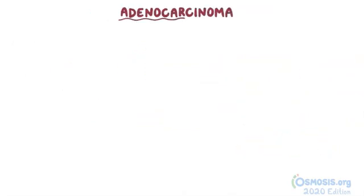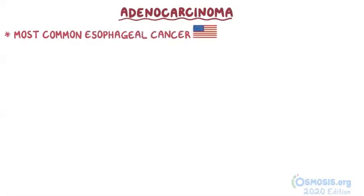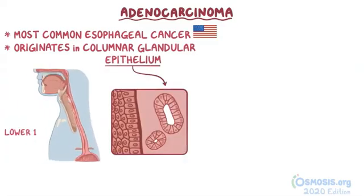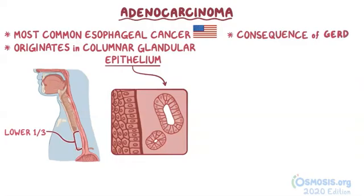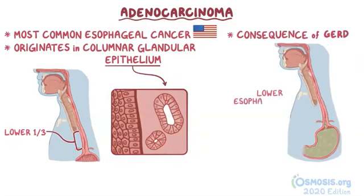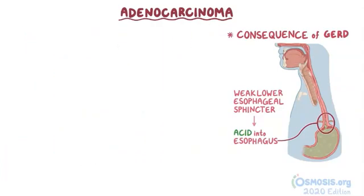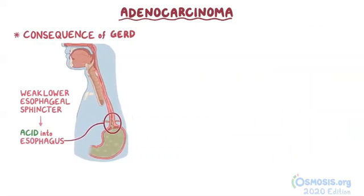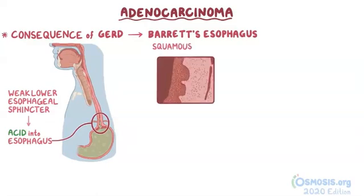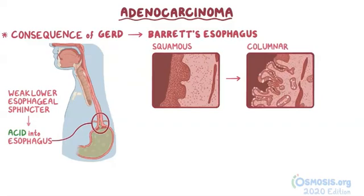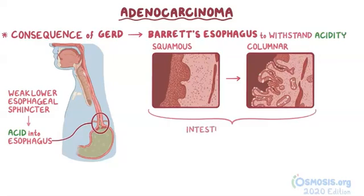On the other hand, adenocarcinoma is the most common type of esophageal cancer in the United States, and it originates in the columnar glandular epithelium, most often in the lower third of the esophagus. Most frequently, adenocarcinoma develops as a consequence of gastroesophageal reflux disease, or GERD. With GERD, the lower esophageal sphincter is weaker than normal, allowing acid from the stomach to go back up into the esophagus after meals. The presence of acid in the esophagus can lead to Barrett's esophagus, which is when the squamous epithelium lining the esophagus is replaced by a columnar epithelium, similar to that of the intestines, that's better adapted to withstand the acidity. This process is called intestinal metaplasia.